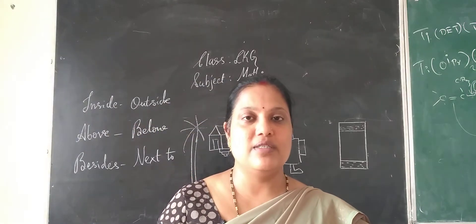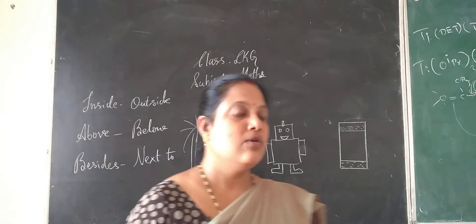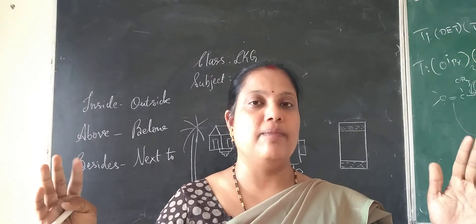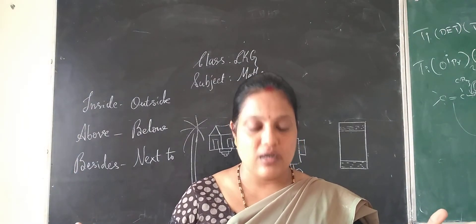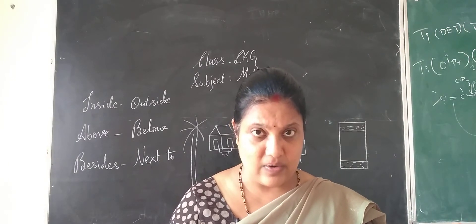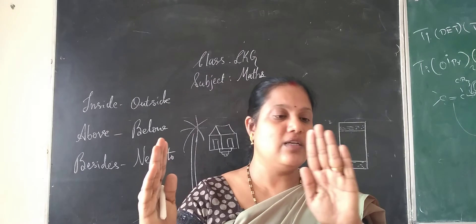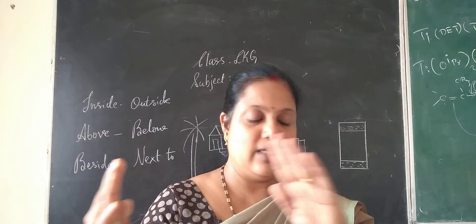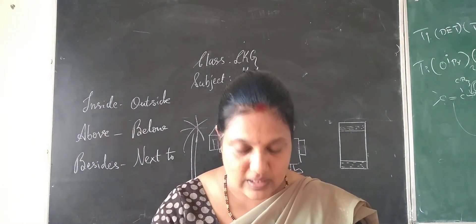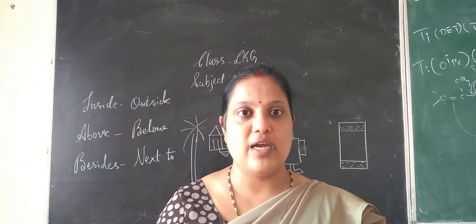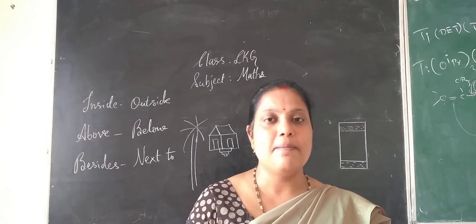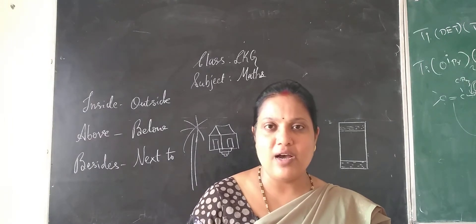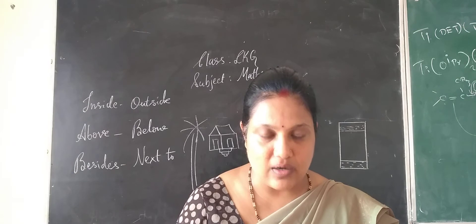Let us see some examples through pictures. You will learn the concepts of inside and outside. Have you seen a box? When you hold the box and look in, that is inside. When you hold the box and look outward, that is outside. That is how you visualize things and say that is inside and that is outside.